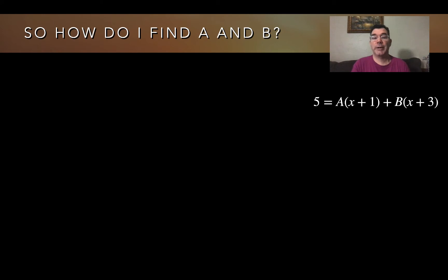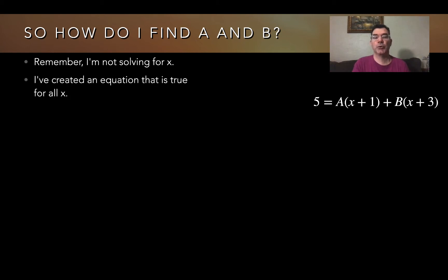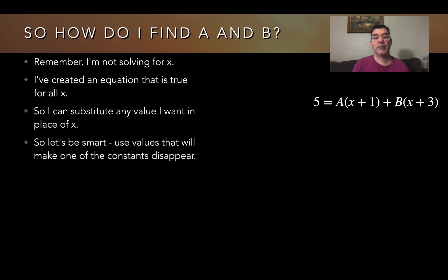Now I can find values of A and B. It looks like I have three unknowns — A, B, and x — but I'm not solving for x. I started with an equation that was true for all values of x, and it still is. So I can strategically choose which values of x to plug in to figure out the constants A and B.